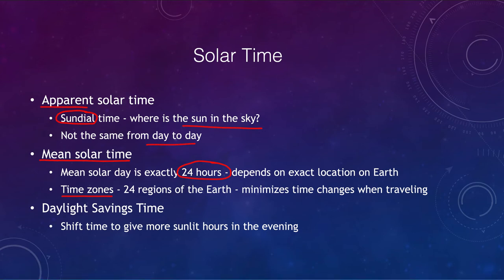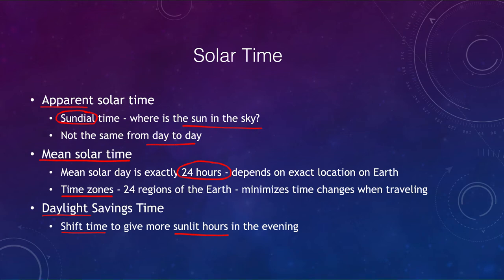Daylight saving time is not an astronomical event. It doesn't change anything astronomically — it is simply a civil change to give more sunlit hours in the evening. Instead of the sun rising and setting earlier in the summertime, the clocks are shifted so the sun rises a little later and sets a little later, pushing those sunlight hours into the evening. It has nothing to do with astronomy; it is purely a civil adjustment.